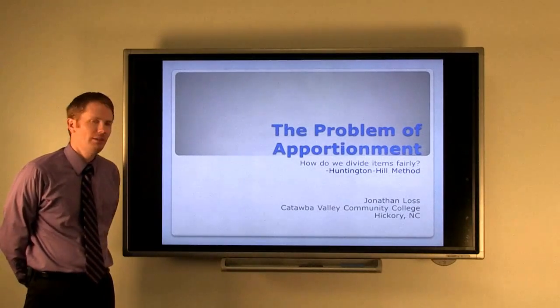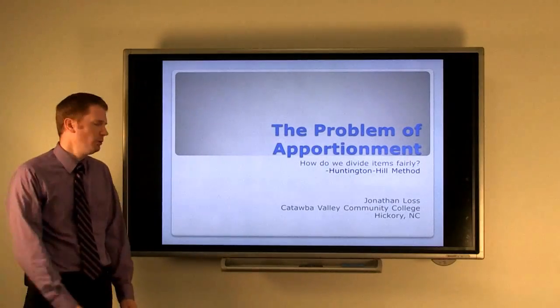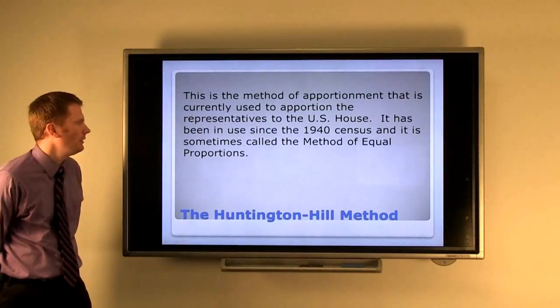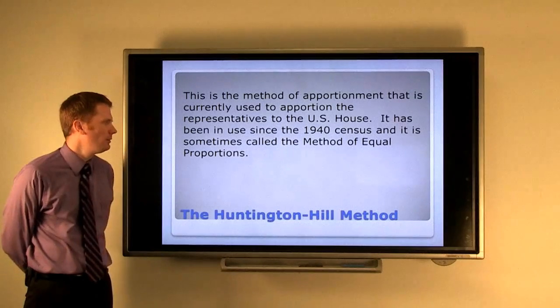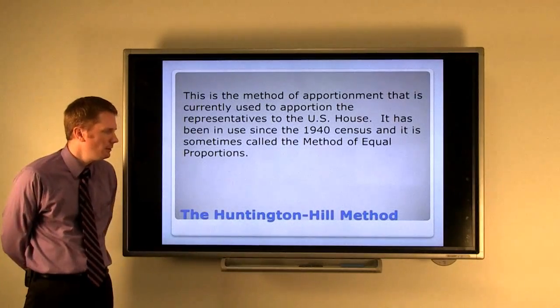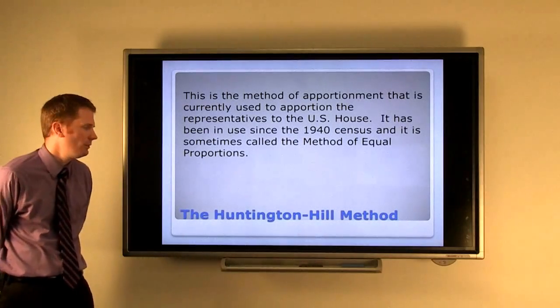We're going to end up with the method that is in use today by Congress to apportion representatives. It's called the Huntington-Hill Method and it's been in use since the 1940 census. It's sometimes also called the Method of Equal Proportions, but the reason it's called the Huntington-Hill Method is because it gives credit to the two mathematicians who came up with this method.